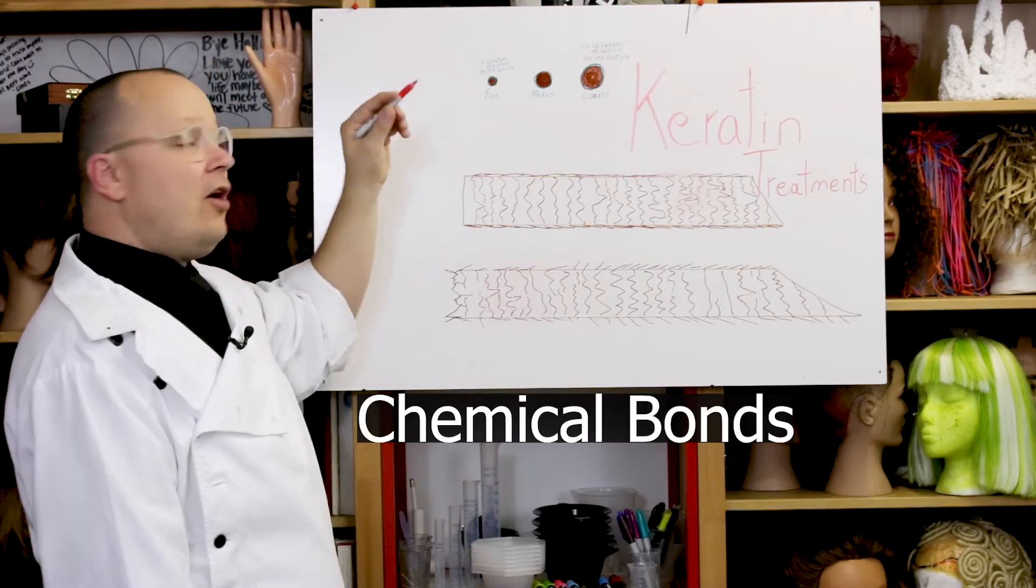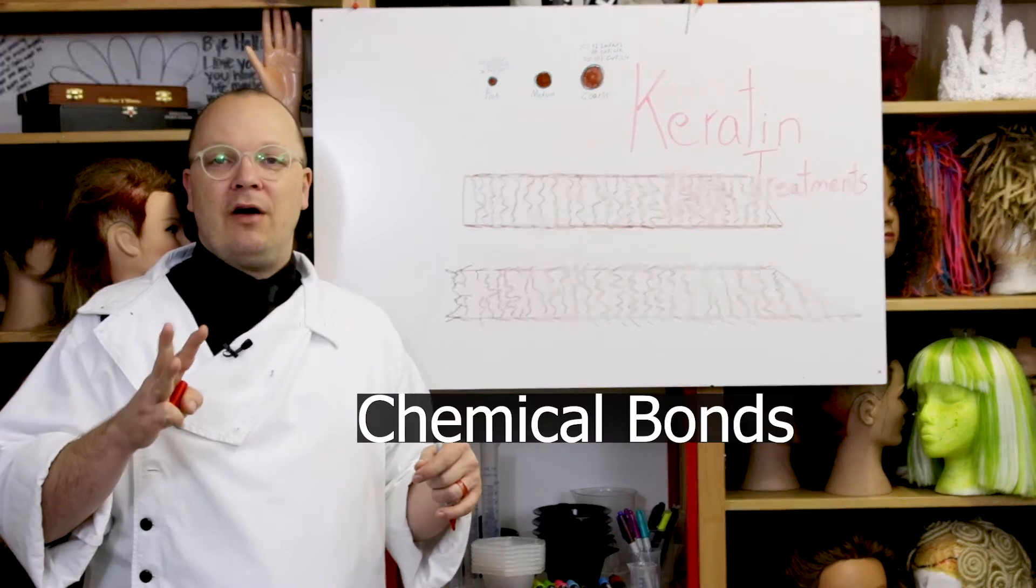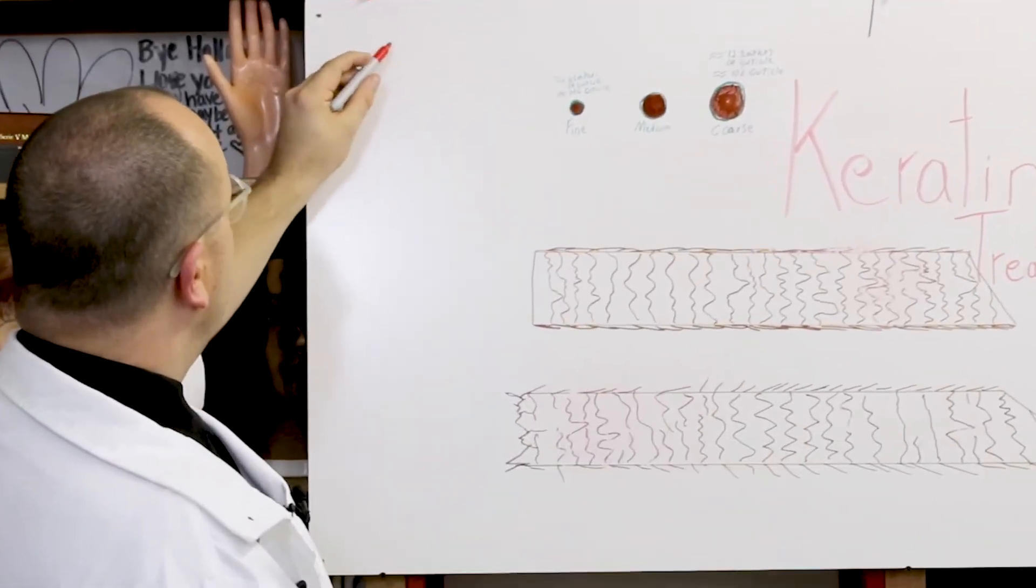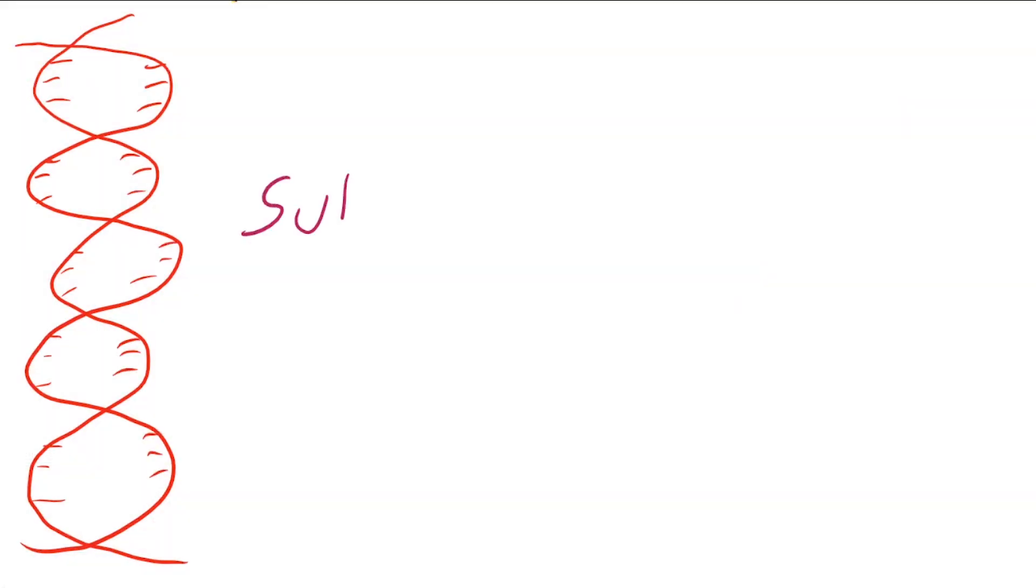If we're looking at the bonds on the hair, there are three main bonds that we manipulate when we're doing hair services. I'm going to draw us a little, this is going to represent our bonds here and we have three different bonds happening. The first one that a lot of people are familiar with is the sulfur bond, usually referred to as the disulfide bond, and that is where two sulfur atoms hold that bond together. So we'll pop some little sulfur atoms in here.